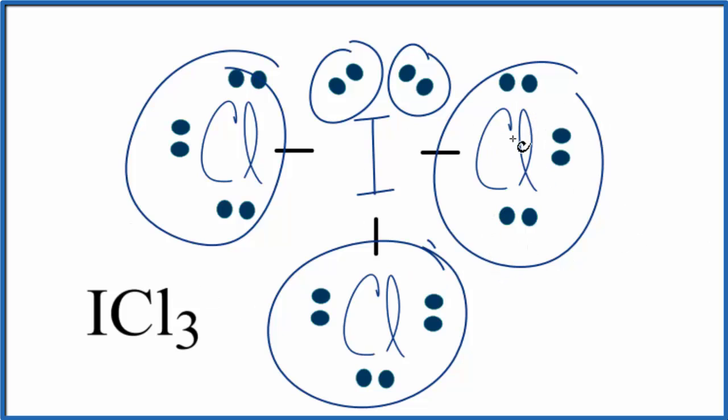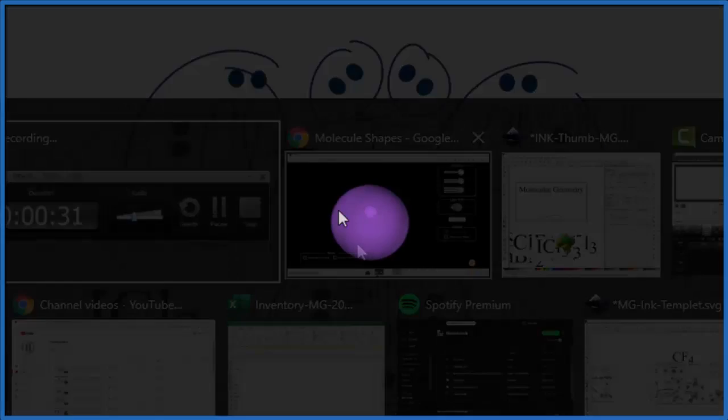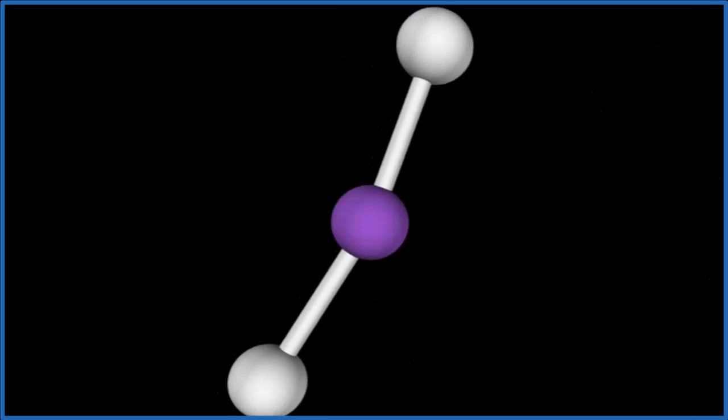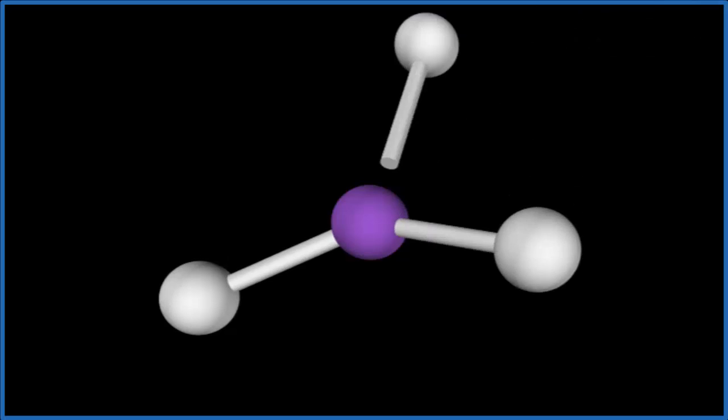It might help if we visualize this with a simulation. So the purple, that's going to be our central iodine atom. And remember, we have three bromines. We had one, two. You can see they're spreading out. Add a third one.